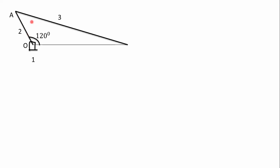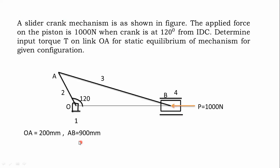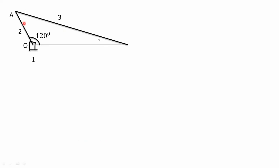After that, draw AB — the connecting rod, that is link 3. The dimension of AB is 900 mm, which means according to scale of 1 centimeter equal to 100 mm, we need to take a 9 centimeter line, which has to cut the horizontal line. Next step is to identify the slider. This is the slider, that is the piston, which is fixed here, and we also have the fixed end — fixed link one.